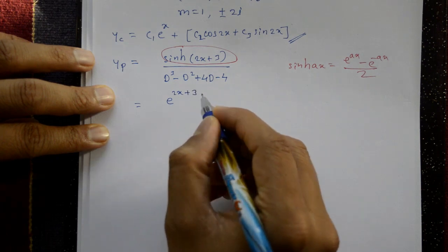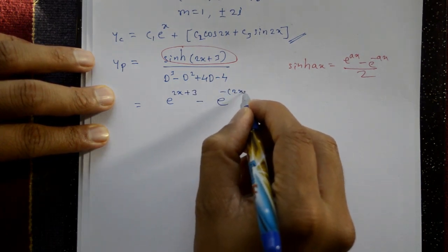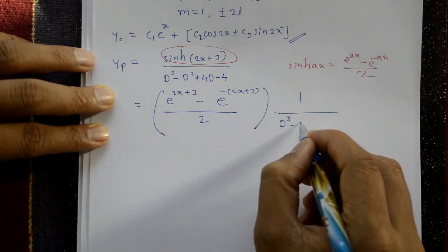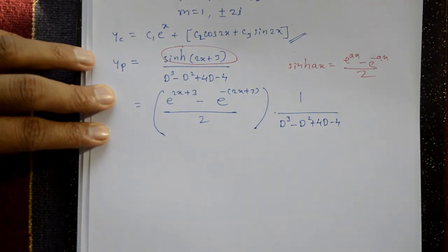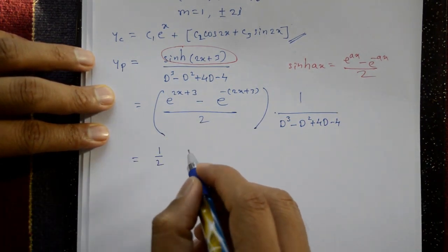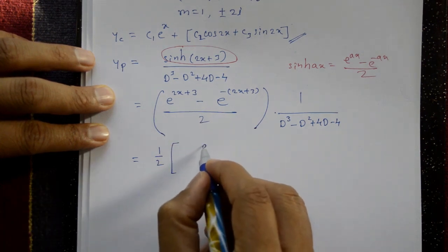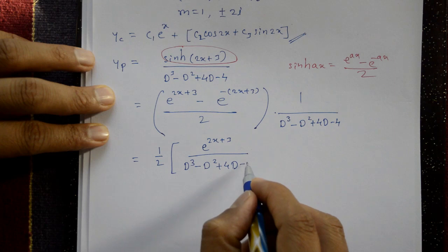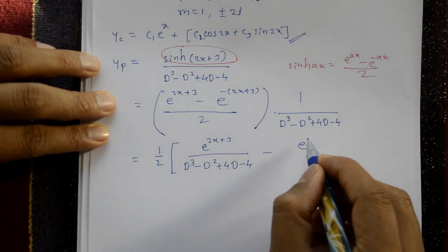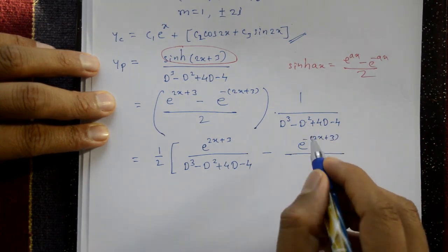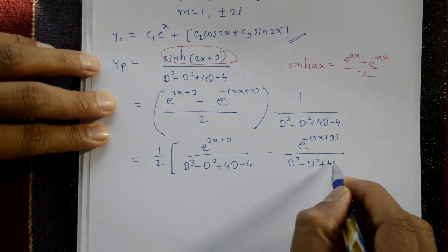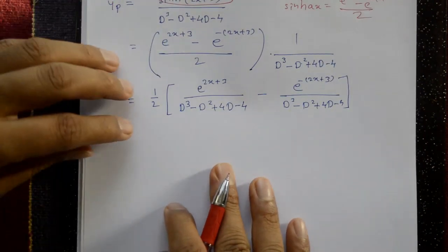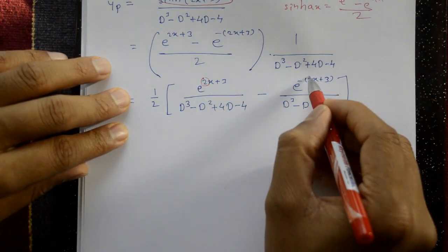Applying the formula: yp = [e^(2x+3) - e^(-(2x+3))] / 2 · 1/(D³ - D² + 4D - 4). Expanding: (1/2) · [e^(2x+3)/(D³-D²+4D-4) minus e^(-(2x+3))/(D³-D²+4D-4)].